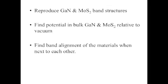The first part of modeling the band alignment is to reproduce the band structures of bulk gallium nitride and molybdenum disulfide. Then you can look at the potential in the bulk materials as compared to vacuum. Then you can look at the potentials in the materials next to each other and compare their band alignments.